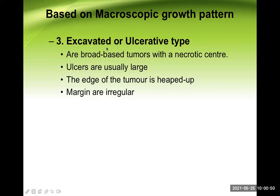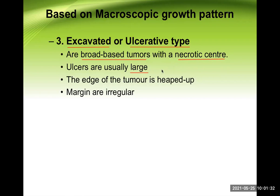The third is excavated or ulcerative type. The name suggests ulcer formation. These ulcers are broad-based with a necrotic center, usually large — much larger than benign gastric ulcers. Sometimes it's difficult to distinguish whether this is a peptic gastric ulcer or gastric cancer. Usually, gastric ulcers are less than two centimeters, whereas gastric cancer ulcers are much larger. The edge of the tumor is heaped-up with overhanging margins because of the rapid growth, and the margins are irregular.